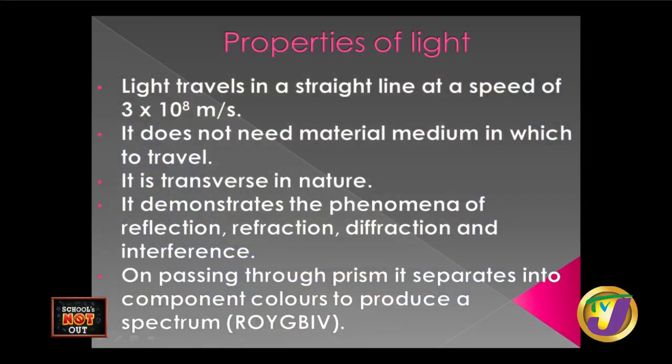The other wave type is longitudinal, but that's not light. Light demonstrates phenomena of reflection, refraction, diffraction, and interference. We're going to look at the first two — this lesson doesn't cover the last two. And passing through a prism, which is essentially a glass triangle-shaped material, it separates into its component colors to produce a spectrum. ROYGBIV is an acronym that stands for the seven component colors of which light is composed.